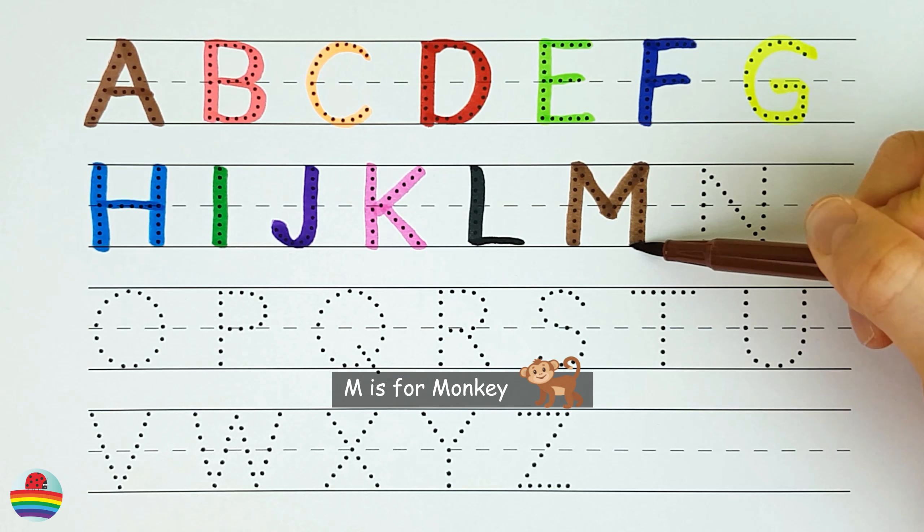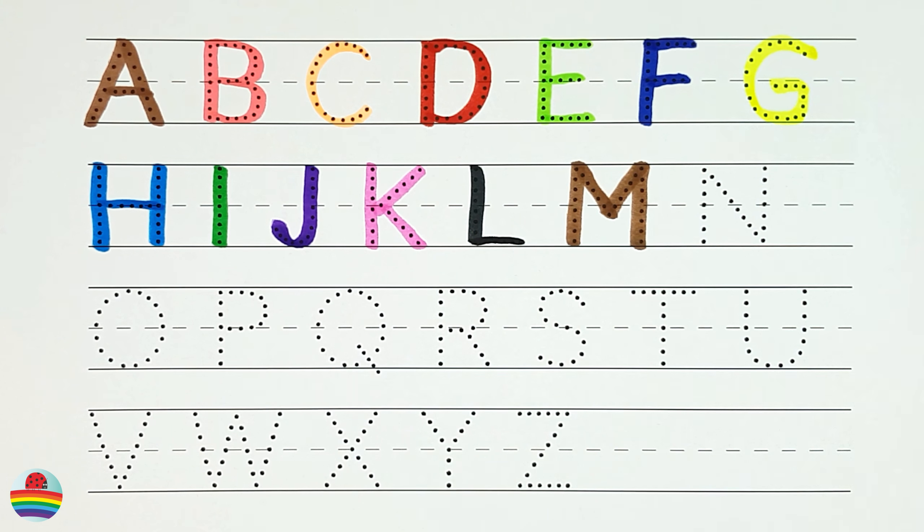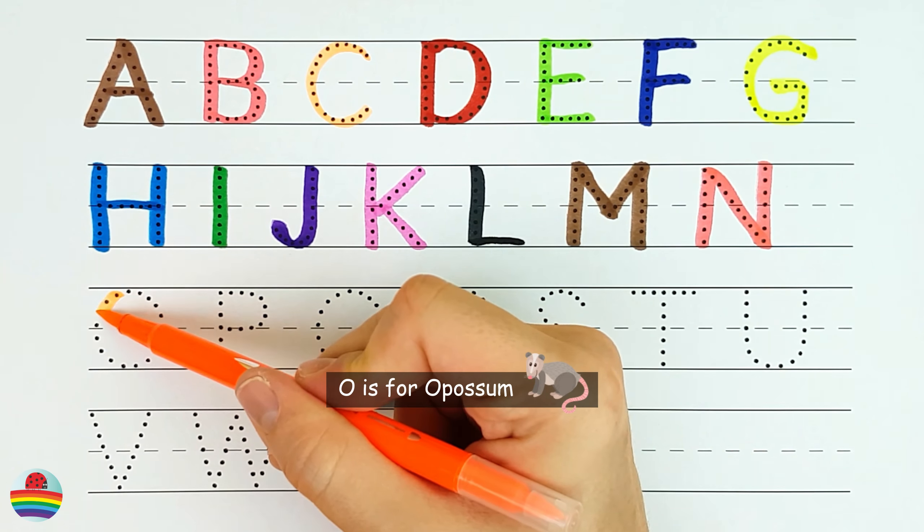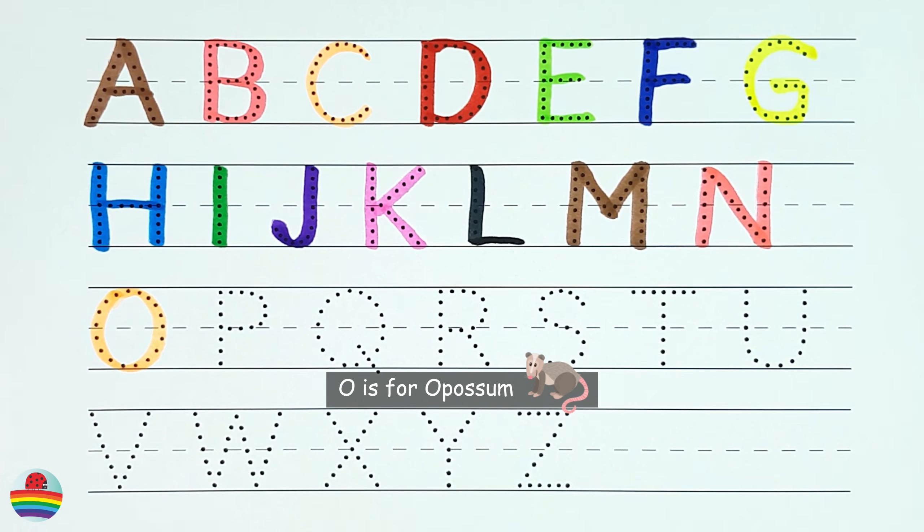M. M is for monkey. M. N. N is for numbat. N. O. O is for opossum. O.